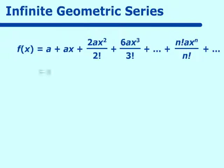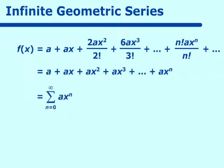Simplifying, we get A plus Ax plus Ax squared plus Ax cubed, plus Ax to the nth power. In sigma notation, that equals the sum from n equals 0 to infinity of Ax to the nth power. That is your geometric series once again shown through the development of a Taylor polynomial.